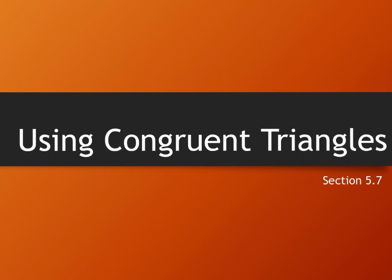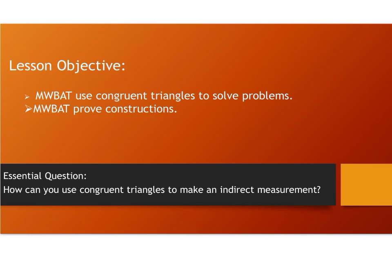Using Congruent Triangles, Section 5.7. Our objective is to use congruent triangles to solve problems and prove constructions. Our essential question: how can you use triangles to make indirect measurements?